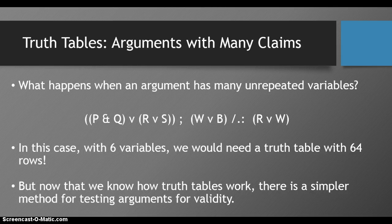So what happens when an argument has many unrepeated variables? In this case, we have six variables. We would need a truth table with 64 different rows in order to be able to use a full truth table to test for validity. But now that we know how truth tables work, there's a simpler method for testing for validity.